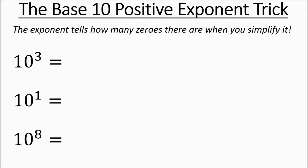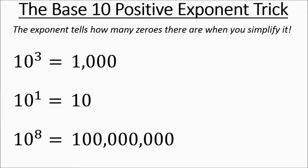So 10 to the third is 1 with three zeros, or 1,000. 10 to the 1 is 1 with one zero. 10 to the power of 8 is 1 with eight zeros. You can always use this trick — it makes life real easy.